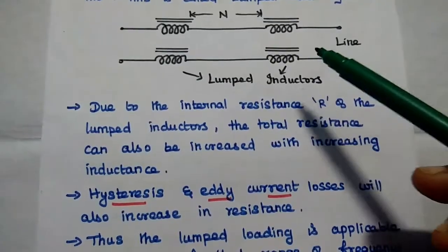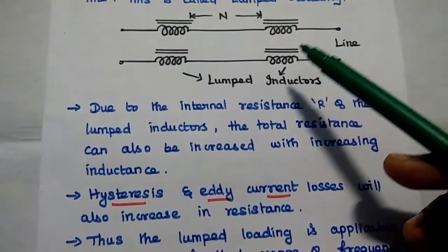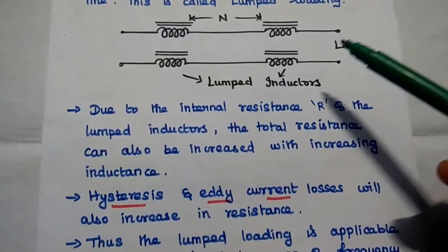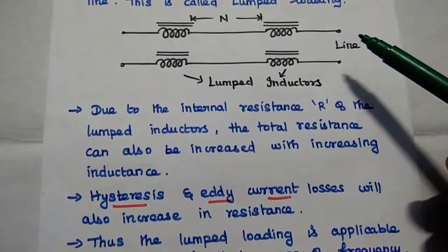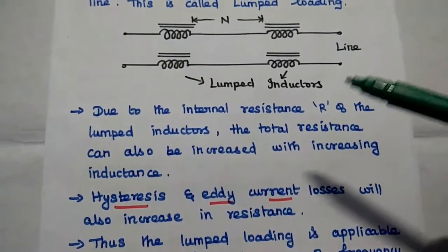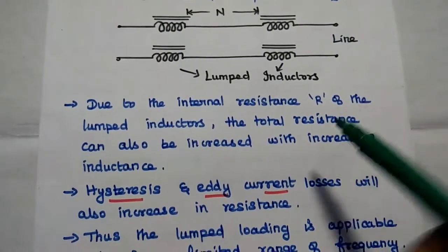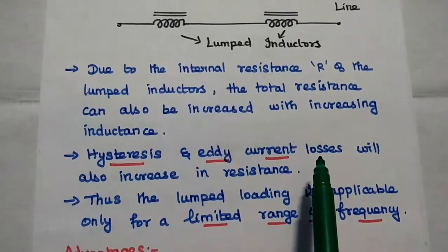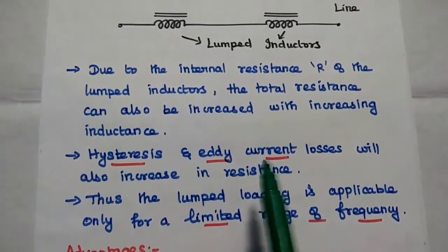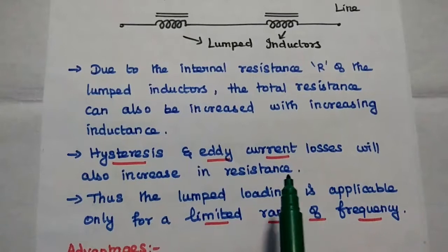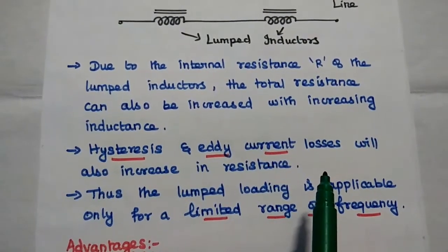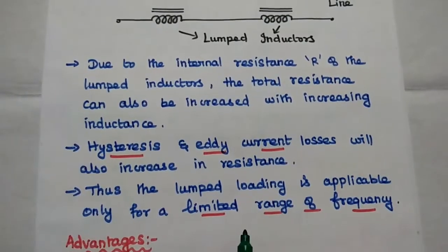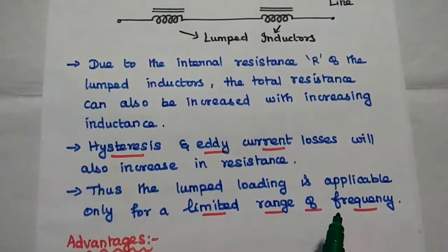Each lumped inductor has its own internal resistance, so along with the inductance, the resistance value also increases. If the resistance value increases, there may be losses — hysteresis and eddy current losses. These two losses will also increase with the resistance value. Thus, the lumped loading is applicable only for a limited range of frequency.